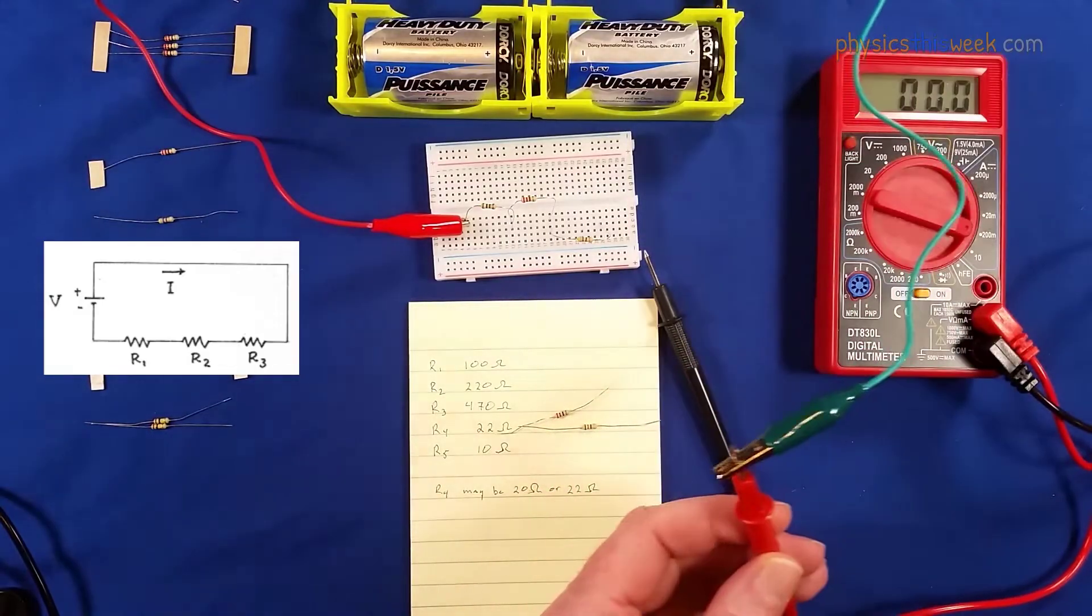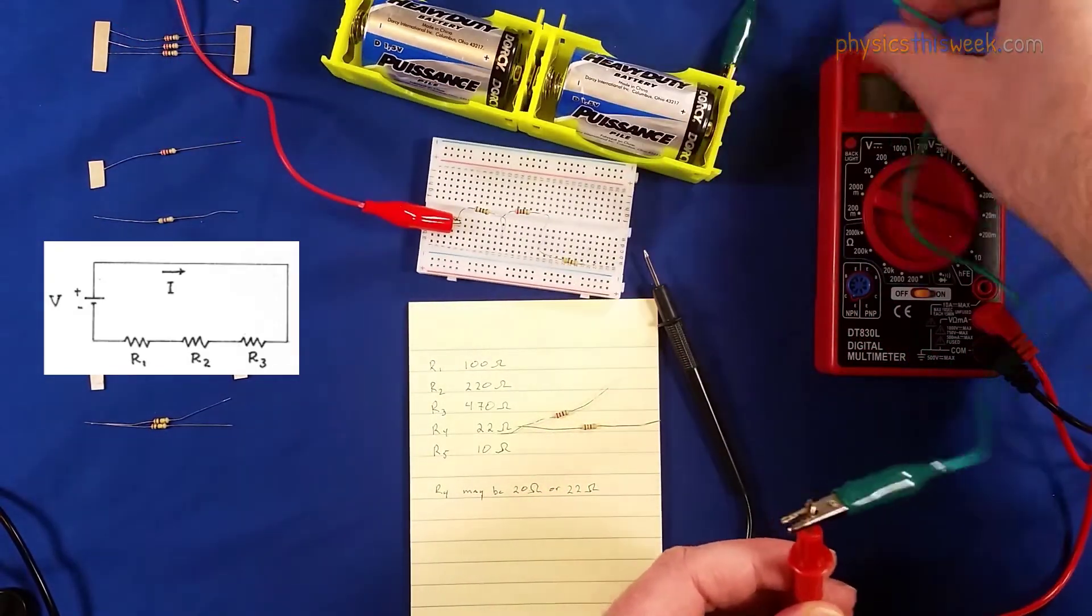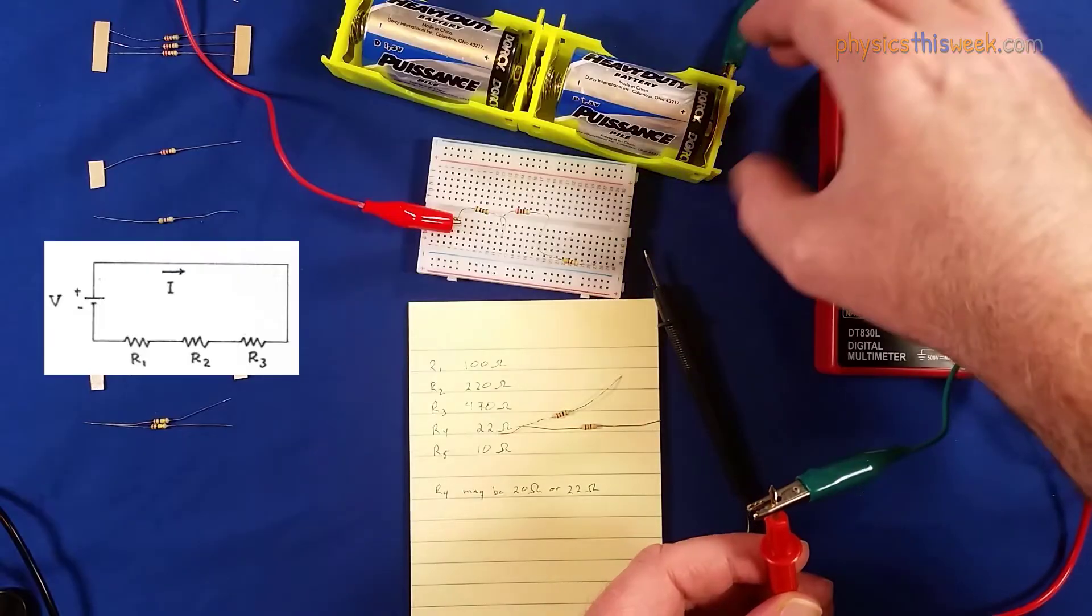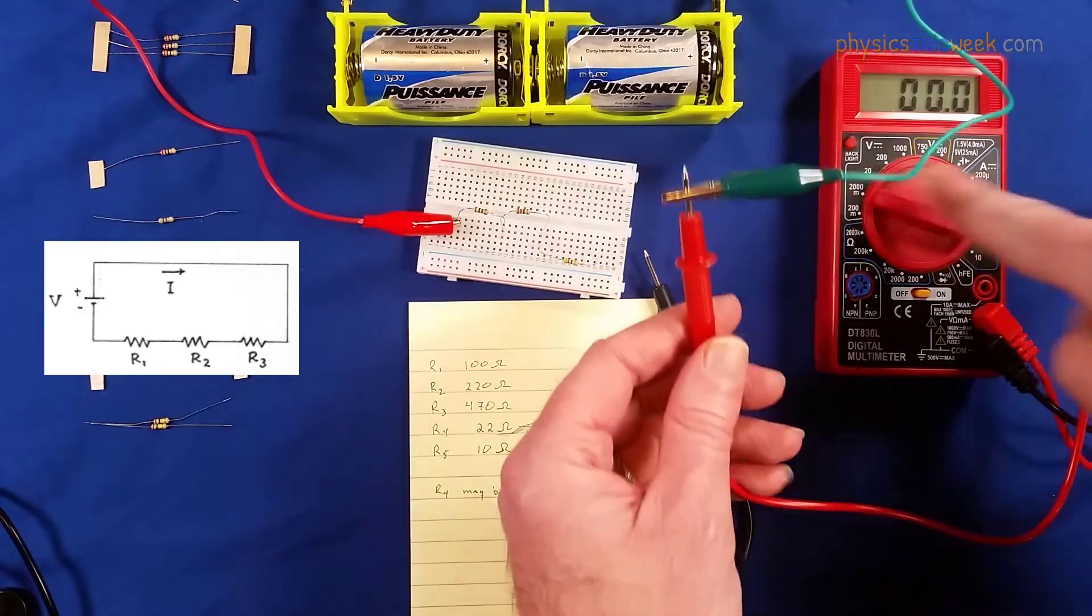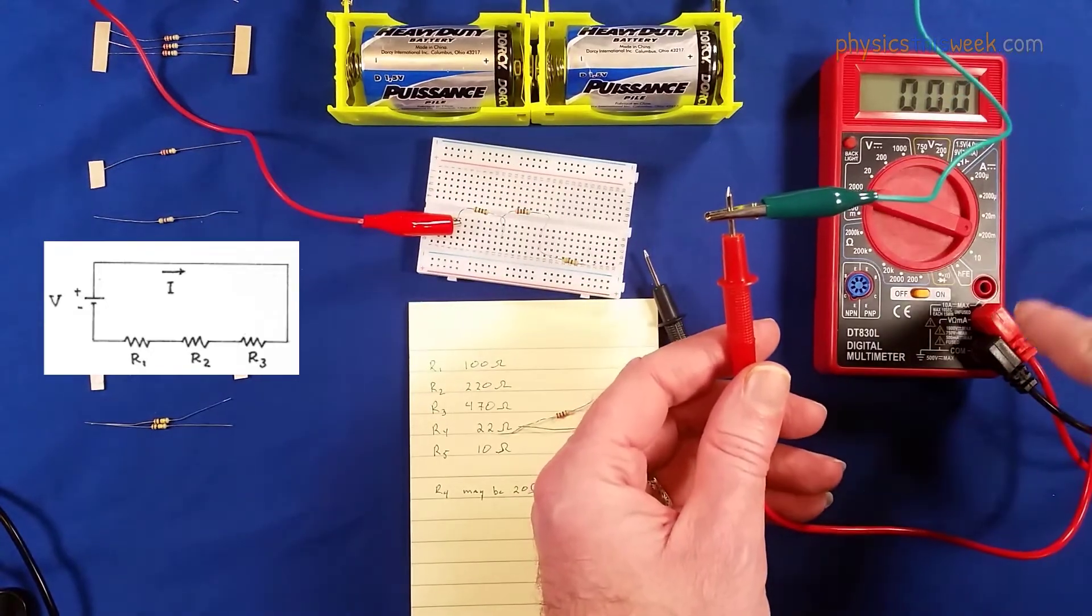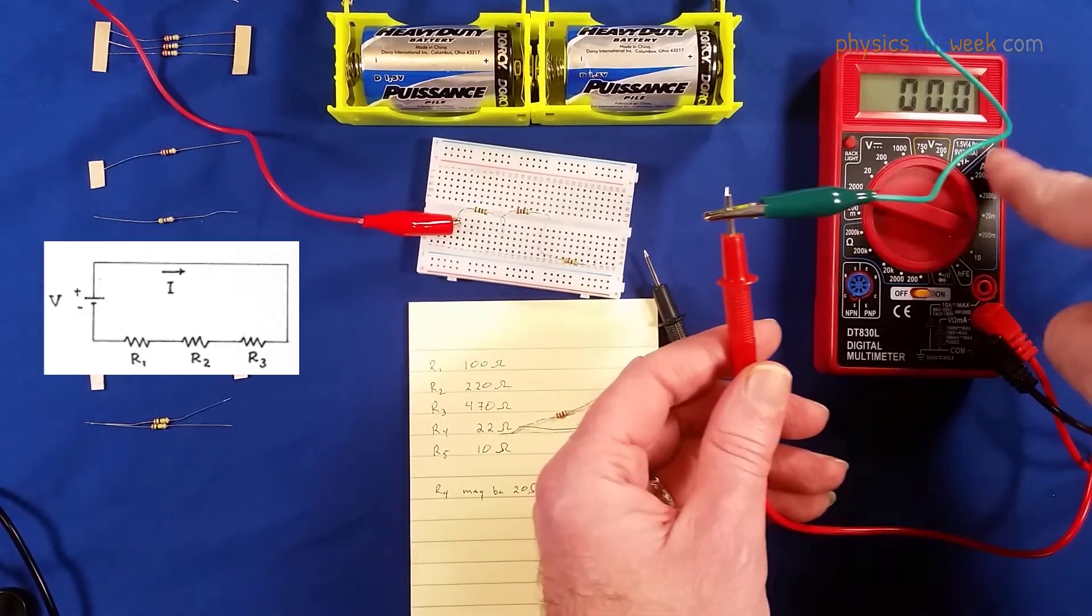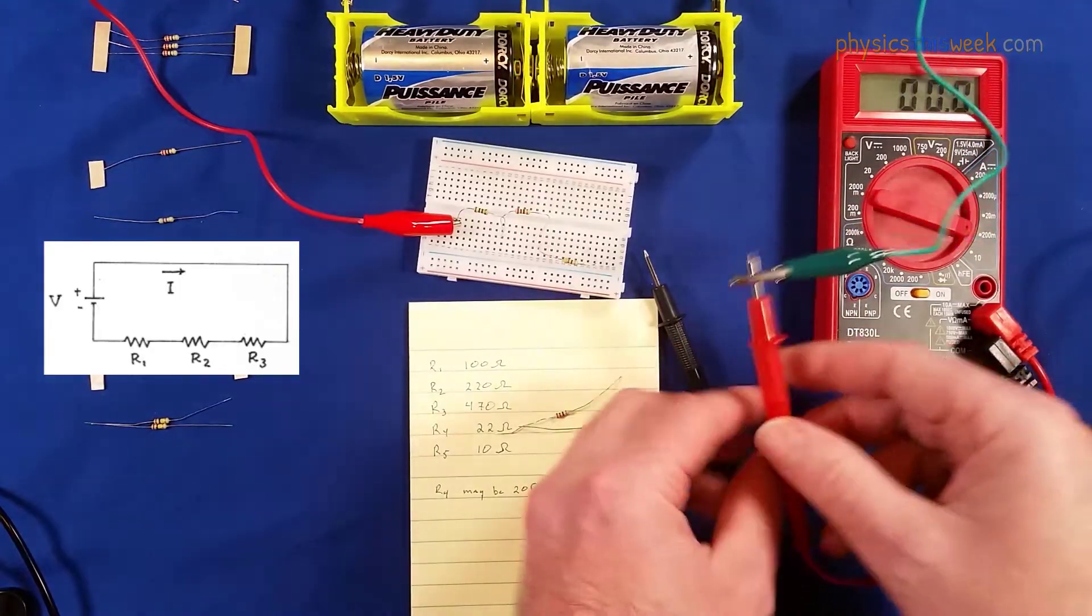And in this case we need to actually have the current go from the battery. Look carefully here, this is where it's hooked up to the positive side of the battery. It is coming to here, it is going then into the ammeter setting of the multimeter and coming back out to this end and then going through the circuit.